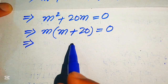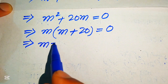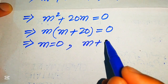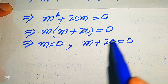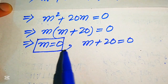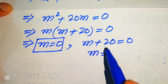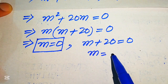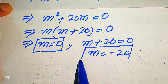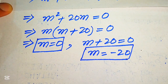We again divide this equation into two cases: the first case gives m = 0, and the second case gives m + 20 = 0, so m = -20. This is our first and second solution from Method 2 as well.